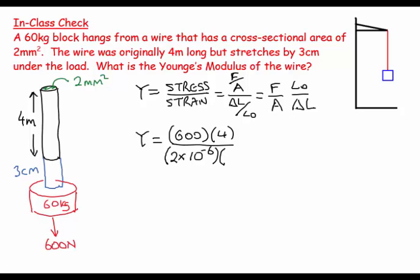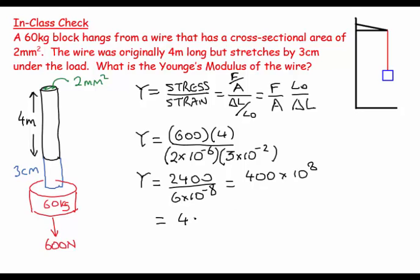And the extension is not 3 because that's in centimeters, it's 3 times 10 to the minus 2. This is a nice problem, not a difficult problem, but I can throw non-standard units at you and see how you do. So this would be 2400 over 6 times 10 to the minus 8, which would be 400 times 10 to the 8, which equals 4 times 10 to the 10.